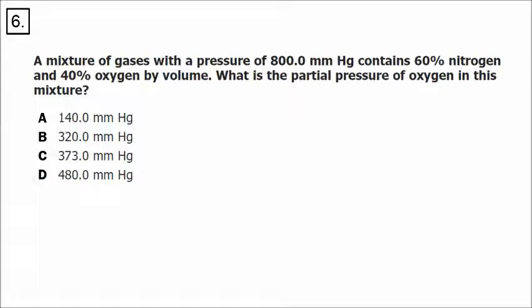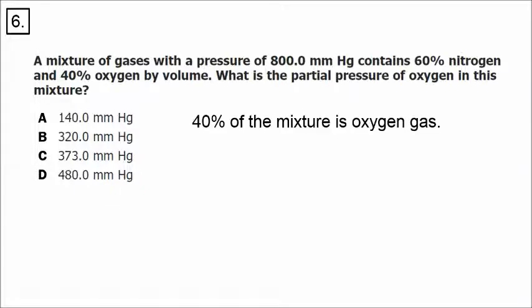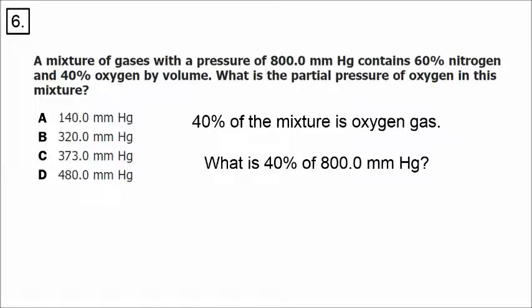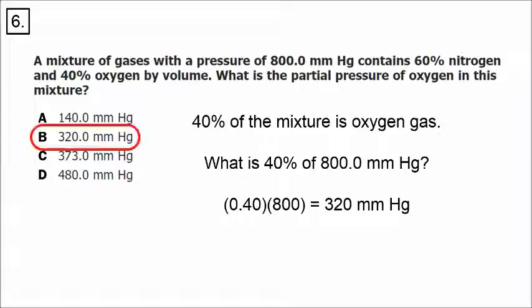In number six, this is really more of a math question than a chemistry question. We have two gases in a mixture: 60% nitrogen and 40% oxygen. We're focusing on the oxygen. 40% of the mixture is oxygen, so what is 40% of 800? 0.4 times 800 is 320. That is the partial pressure of oxygen. The correct answer is B.